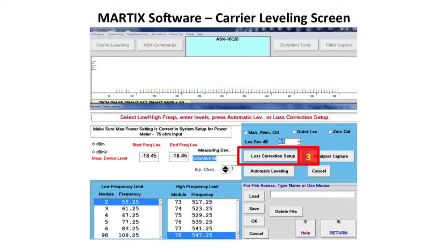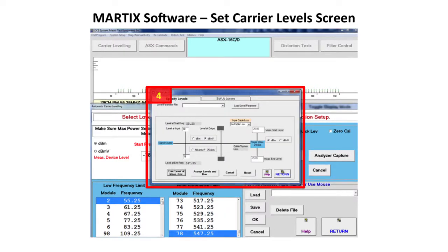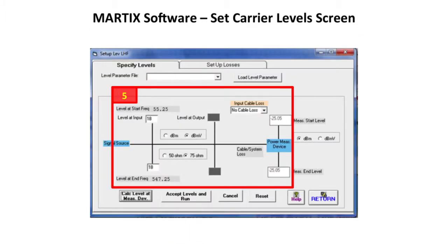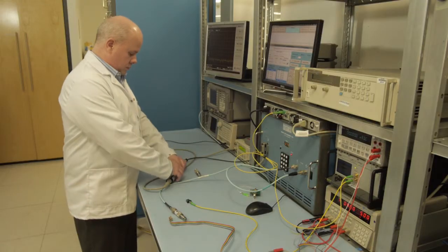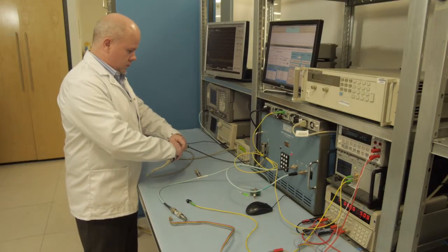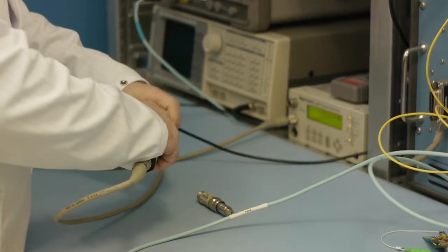The carrier leveling screen allows the user to select the number of channels that will be leveled. The power selected here was for input flat leveling of plus 18 dBmV. The 50 ohm power meter measures minus 25.05 dBm per channel when the MLP loss is taken into account. Leveling 79 channels takes approximately one minute and when completed the power sensor can be disconnected from the RF cable coming from the multi-channel generator.